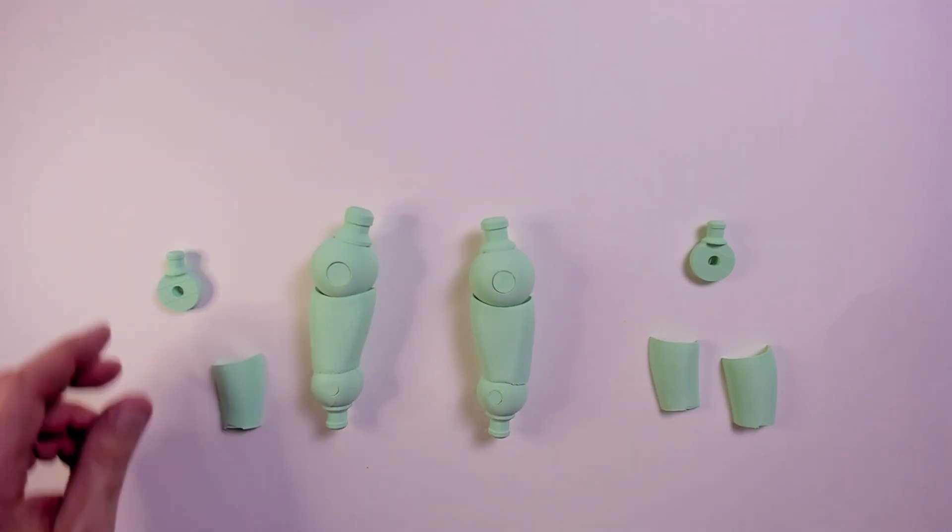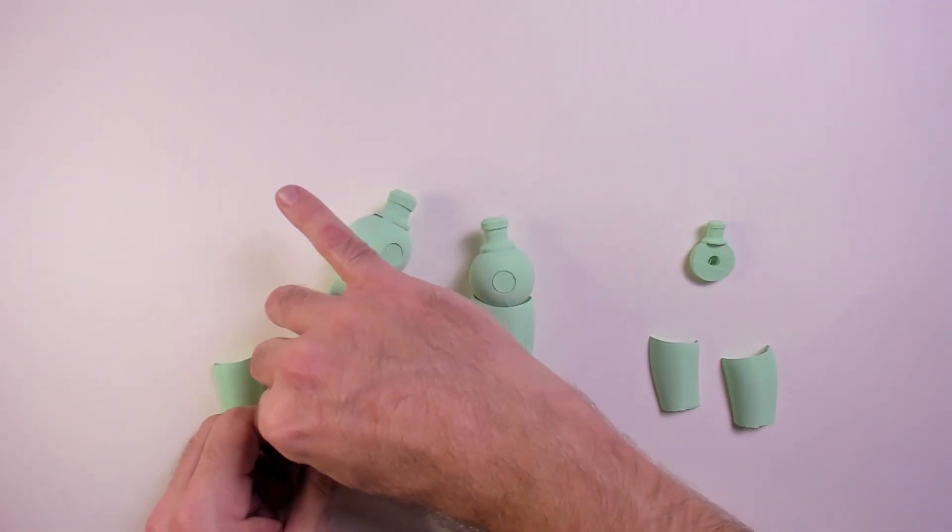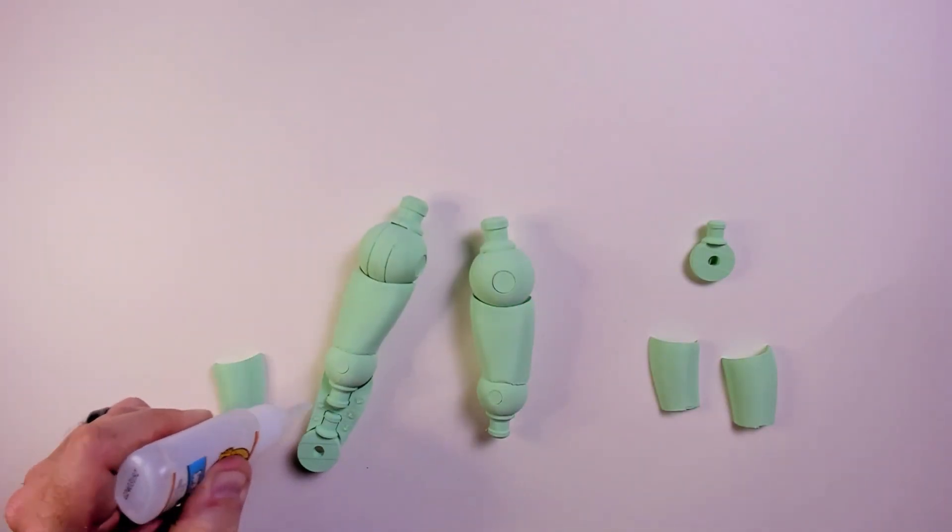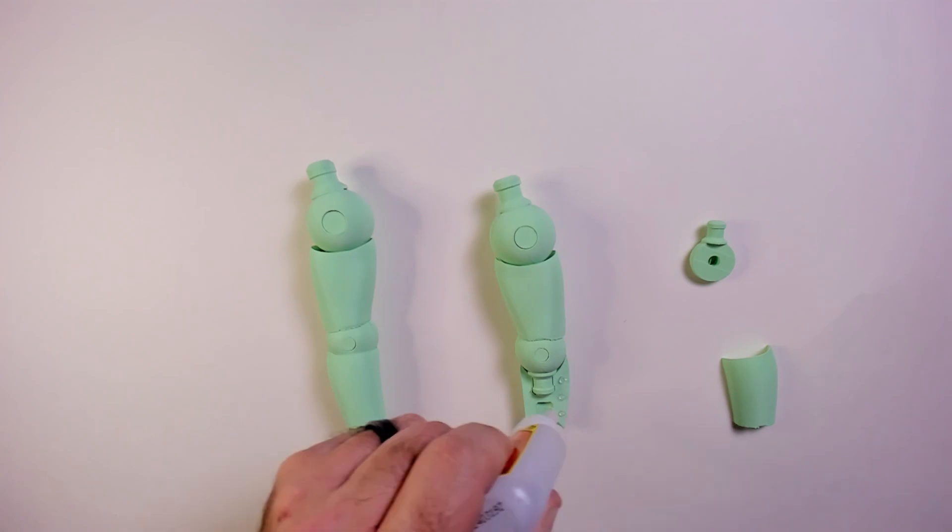Put the hand hinge in place and glue together the lower arm. And again for the other arm.